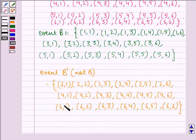So this is the sample space that we get for event B dash or event not B. That is (2,1), (2,2), (2,3) till (2,6), (4,1), (4,2) till (4,6), (6,1), (6,2) till (6,6).